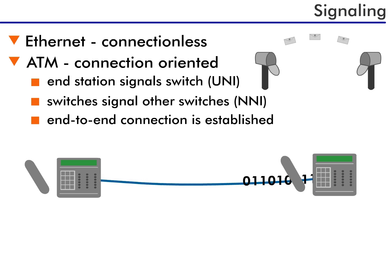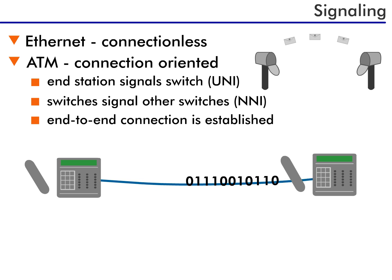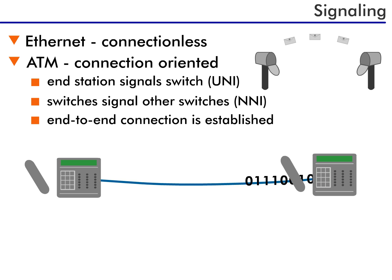The local switch signals other switches along the path to the destination. Each switch in line establishes a connection and signals the next switch. Finally, the last switch connects to the remote destination, and a connection is set up. Once the remote device is contacted, a connection signal is returned to the originating device. This serves as the connection acknowledgement, and now communication can occur.